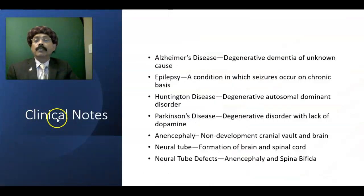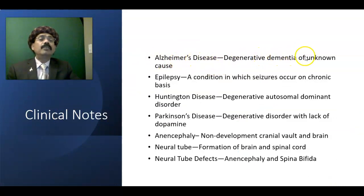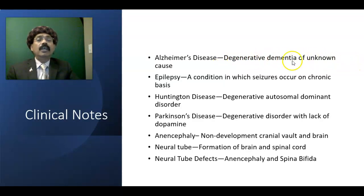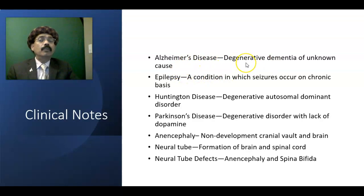Clinical notes: Alzheimer's disease is a progressive dementia of unknown cause. On postmortem examination we find neurofibrillary tangles, amyloid bodies, and tau proteins. The brain is overall atrophied, with the frontal and temporal lobes most affected, resulting in loss of memory and cognition.